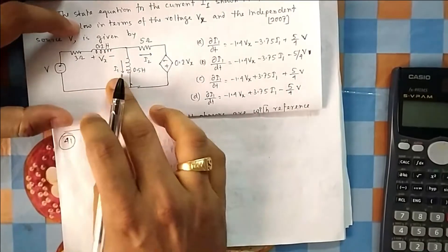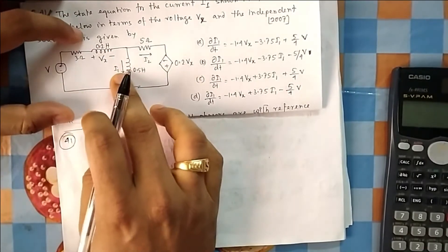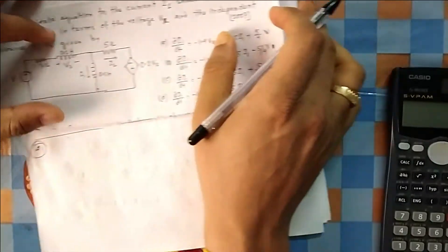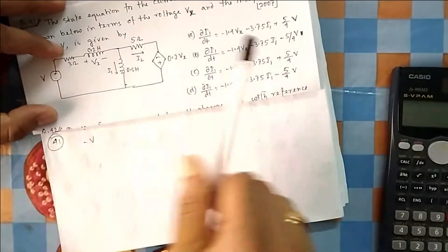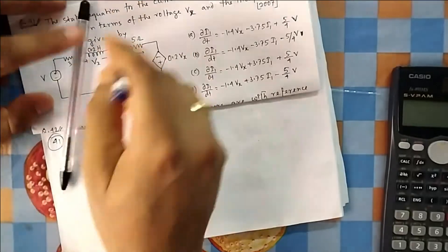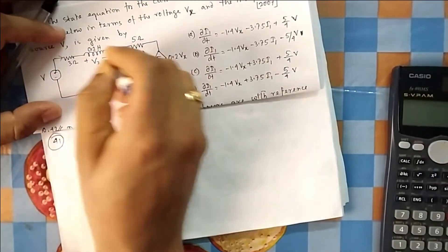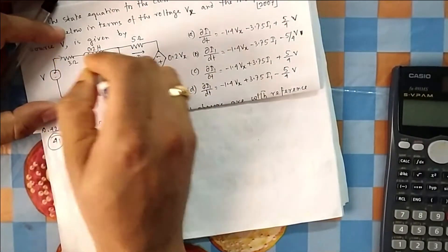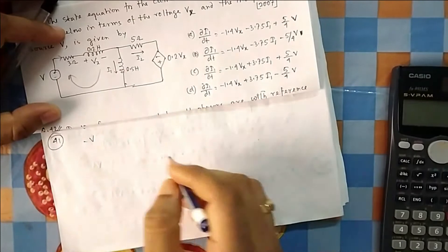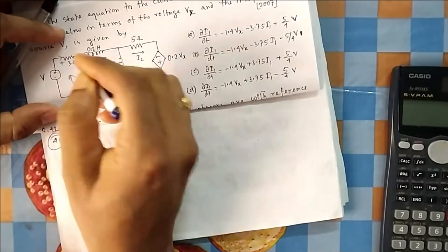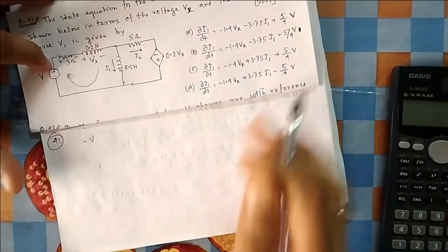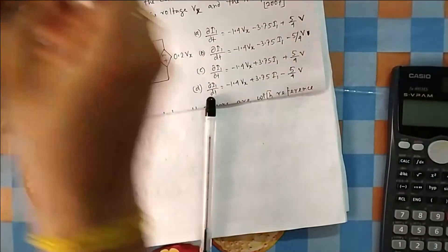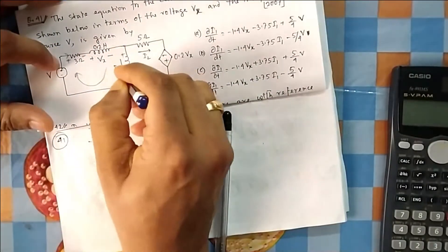Take KVL here and you can get L di/dt easily. If I take KVL in that direction, I get minus V first. I am considering current moving in this direction and applying KVL — because current is entering, that terminal is plus. I have already shown that wherever current enters a resistance, that is the plus terminal.